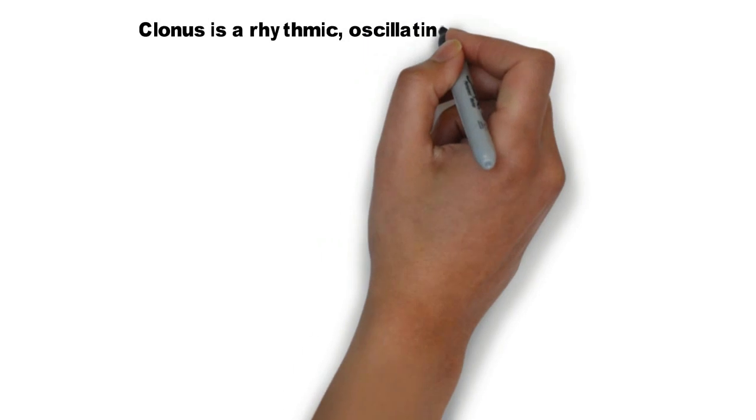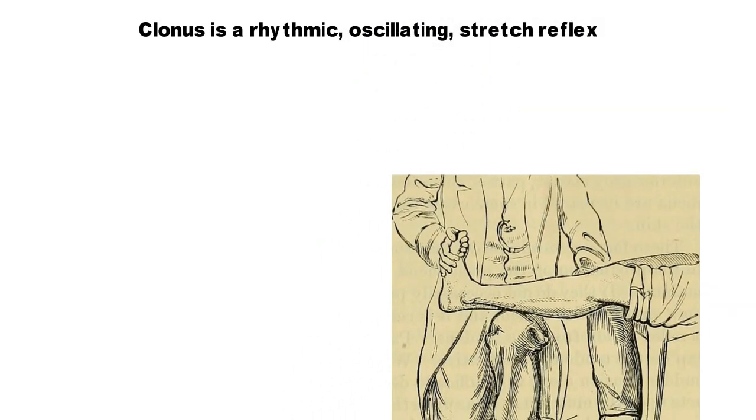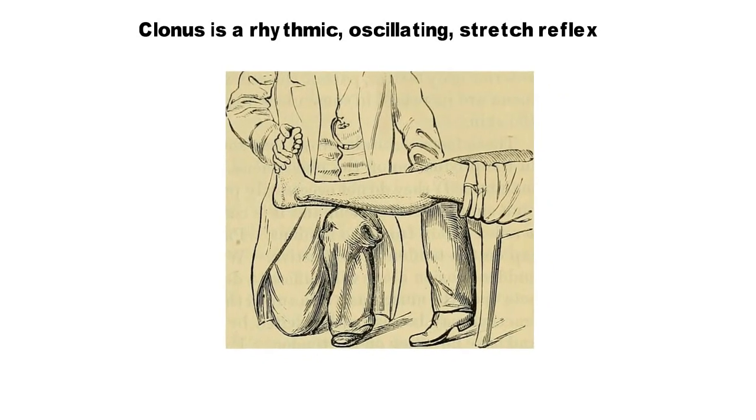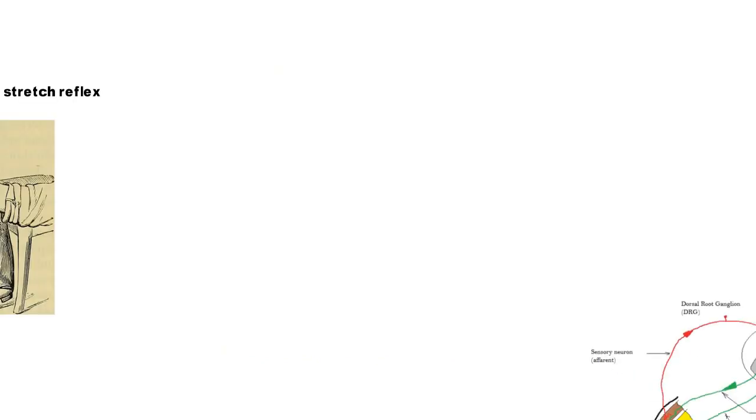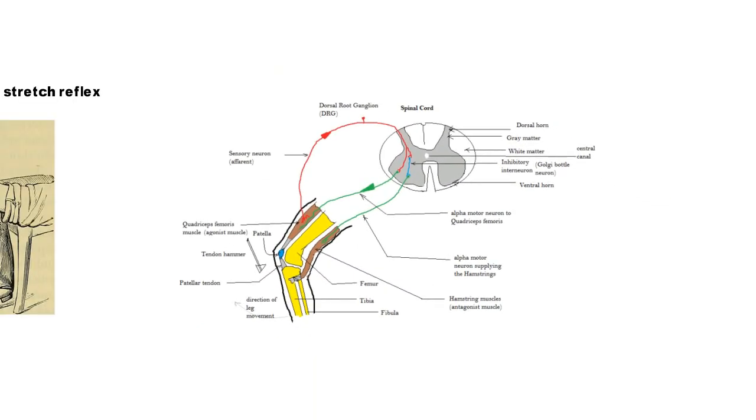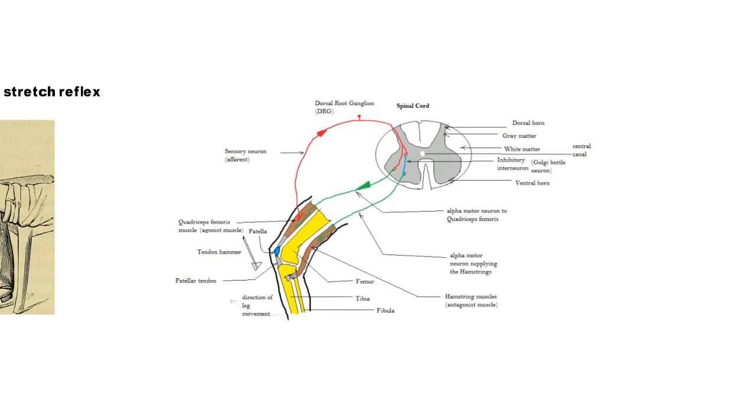Clonus is a rhythmic oscillating stretch reflex. It occurs in cases of hyperreflexia because each time the muscle relaxes from the previous contraction, the applied stretching force renews the reflex, setting up a rhythmic series of muscle contractions that continue as long as the tension is applied, thus producing clonus.